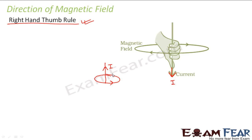So now you have an idea about the magnetic field due to a straight current carrying conductor. The magnitude of magnetic field is directly proportional to the current, inversely proportional to the distance, the pattern is in the form of concentric circles, and the direction is given by the right hand thumb rule.